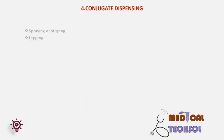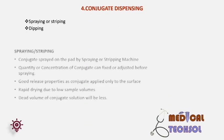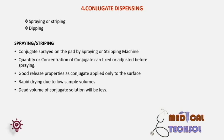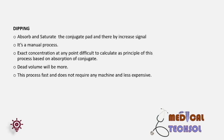Conjugate dispensing methods: 1. Spraying or striping method — conjugate is sprayed onto the pad by a spraying or striping machine; the quantity or concentration of the conjugate can be fixed or adjusted before spraying; good release property as conjugate is applied only to the surface; rapid drying due to low sample volume and low dead volume. 2. Dipping method — absorbs and saturates the conjugate pad, increasing signal; it is manual; exact concentration at any point is difficult to calculate; dead volume will be more; this process is fast and does not require a machine and is hence less expensive.